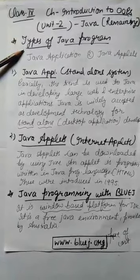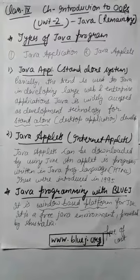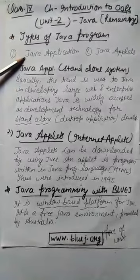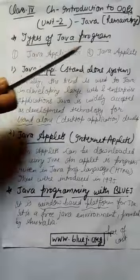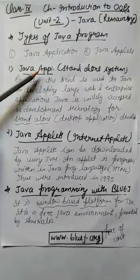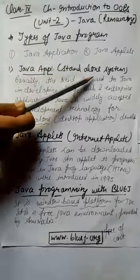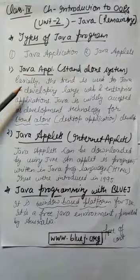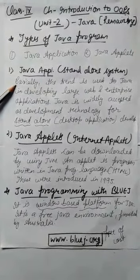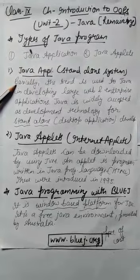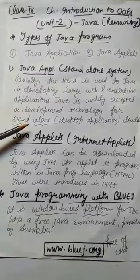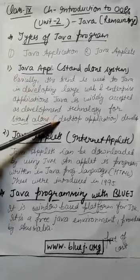So number one is types of Java program. Basically there are two types of program that can be created with the help of Java language. Number one is Java application and number two is Java applets. First we will consider Java applications. Java applications are also known as stand-alone system or stand-alone applications because basically the trend is used to Java in developing large web enterprise applications. Java is widely accepted as the development technology for stand-alone application means these are basically meant for desktop applications.